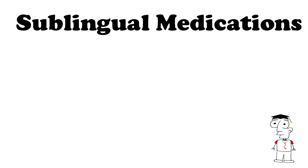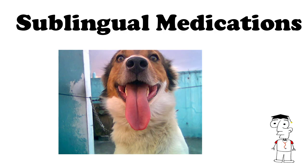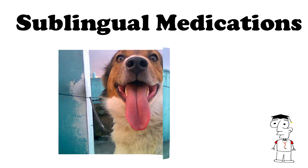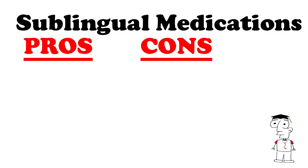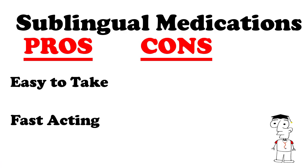Sublingual medications or SL meds are medications that you place under your tongue and are absorbed into your system that way — sub meaning below and lingual referring to your tongue region. Pros are that they can be easy to take if you don't like swallowing medications, and they're actually pretty fast acting compared to PO meds.